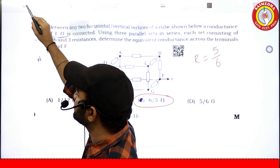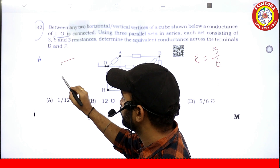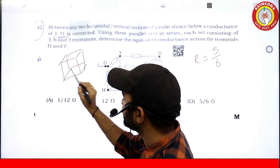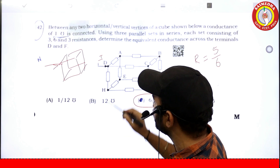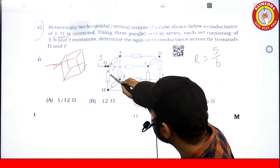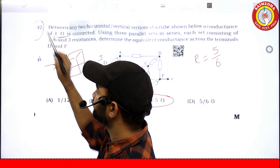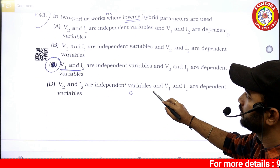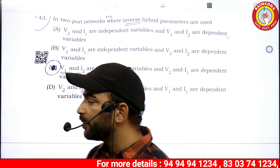The answer is 6 divided by 5. We have done a circuit solution with current analysis, dividing by the current, and different loop equations. The answer is 6 divided by 5. Next topic: 2-port networks.